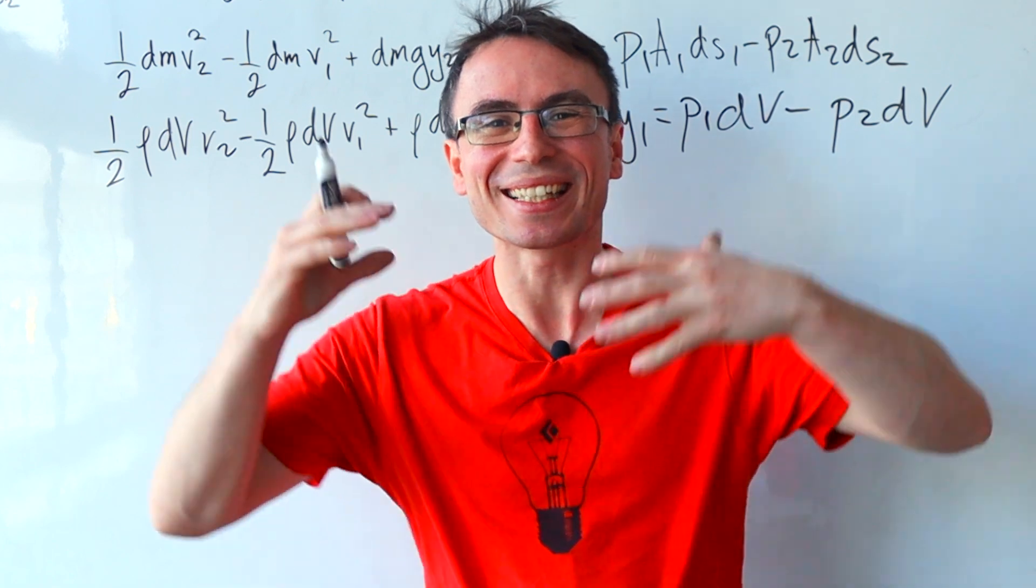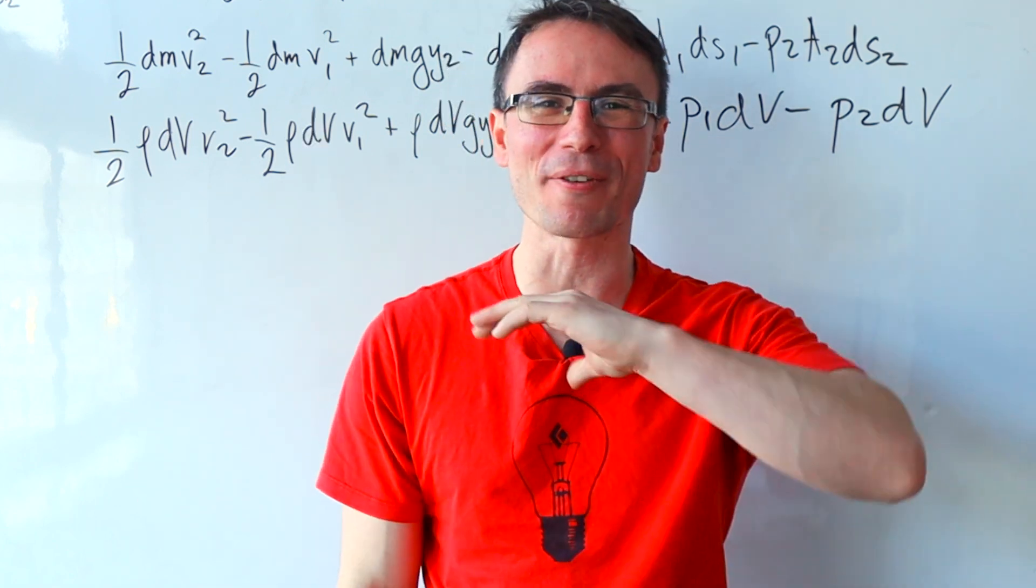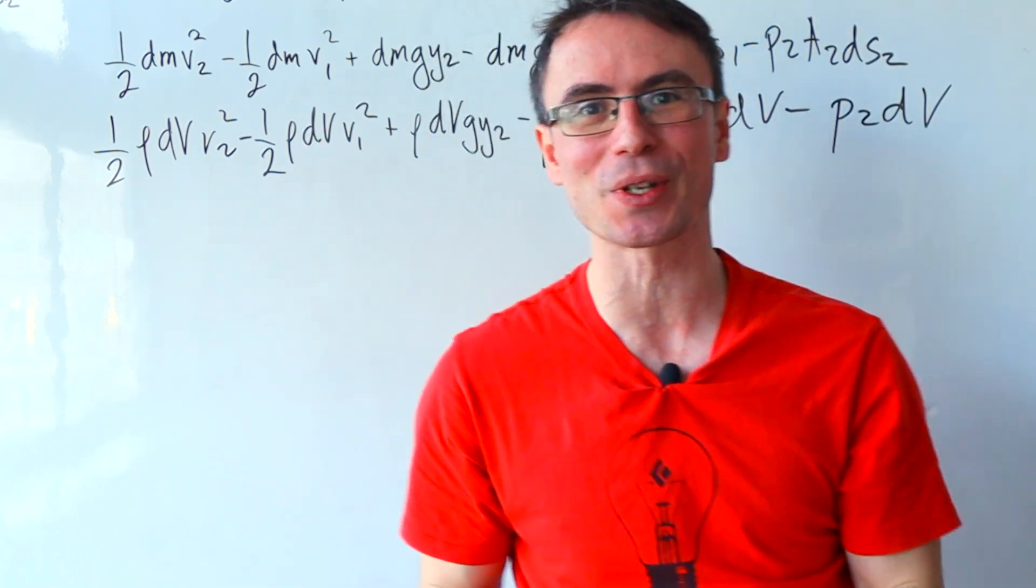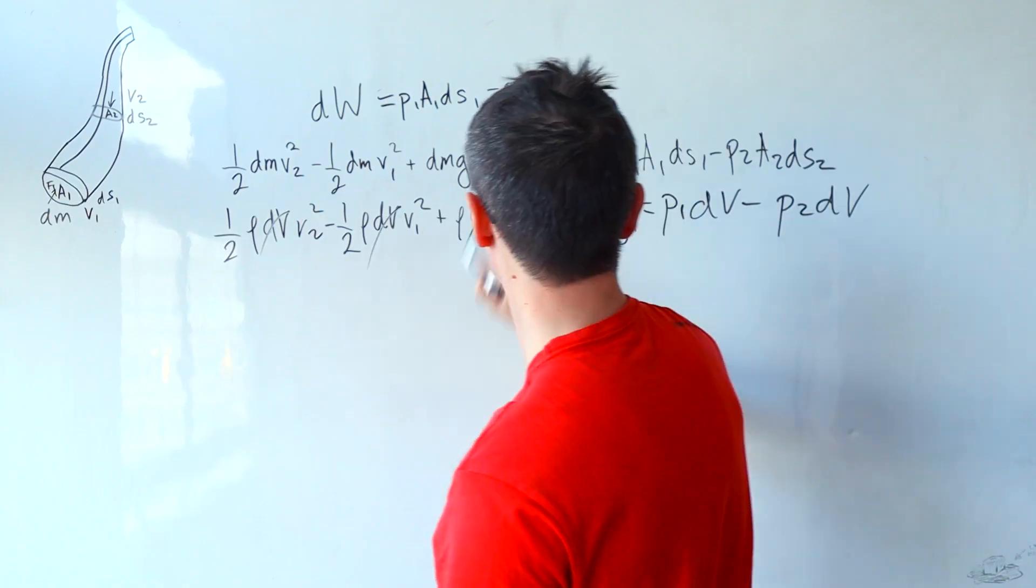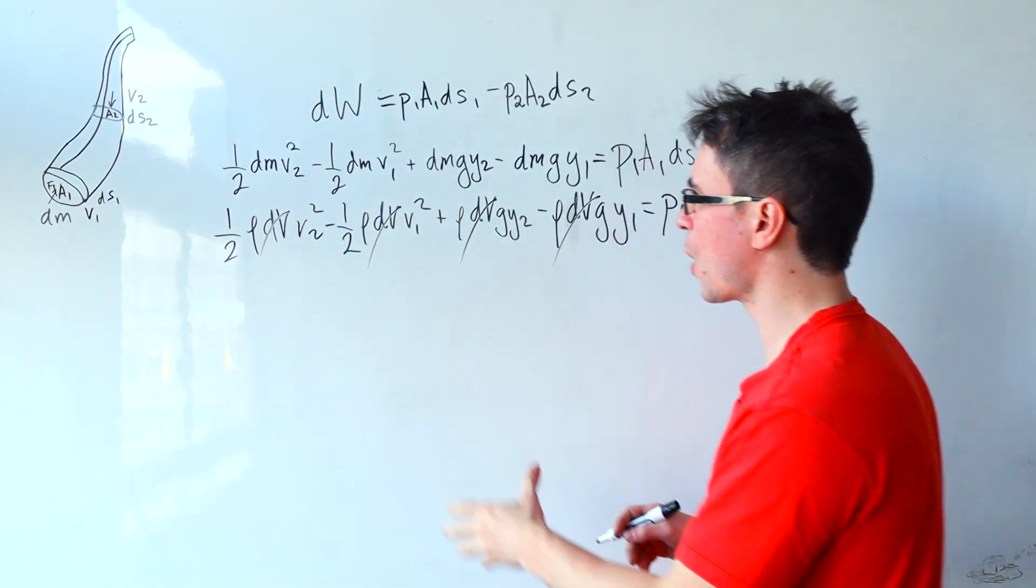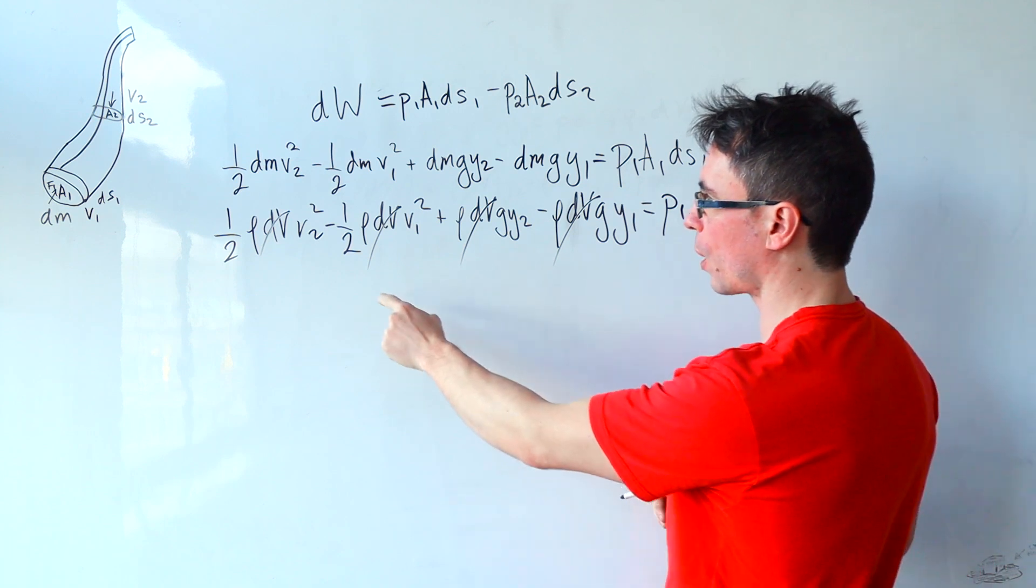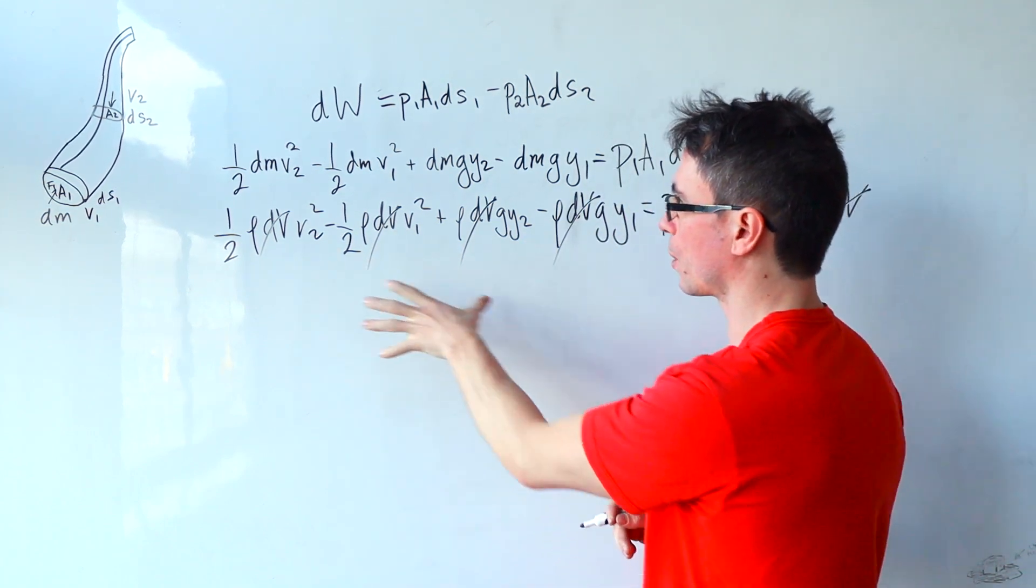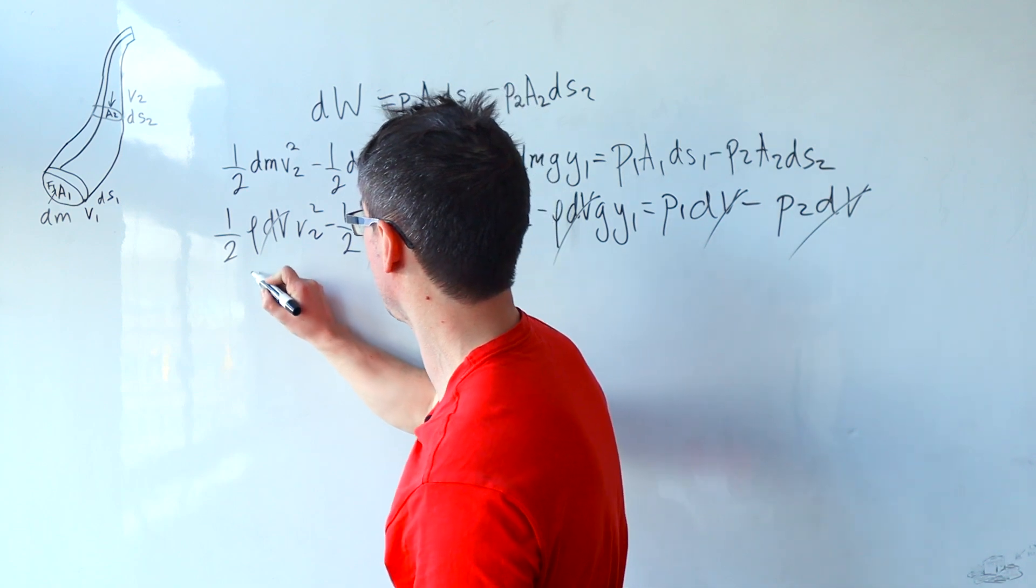Because we're assuming that this is an incompressible fluid we can do one of my favorite things, that is to cancel terms out of an equation. And now let's tidy the expression up by putting all of the v2 and y2 components on the left.